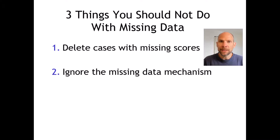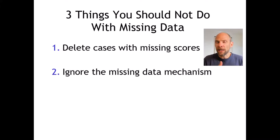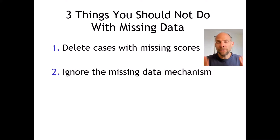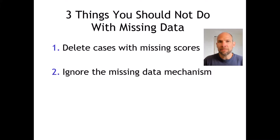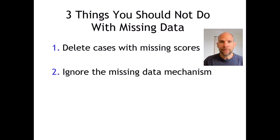Are there variables in the dataset correlated with dropout or missingness? For example, demographic variables such as age, gender, or socioeconomic status — some people may not be willing to report their income, perhaps older people feel awkward about it or other groups may be ashamed. You want to find out why cases are missing, which cases, for which variables, and what could be the reason. Create missing data indicators and correlate those with variables in your dataset.